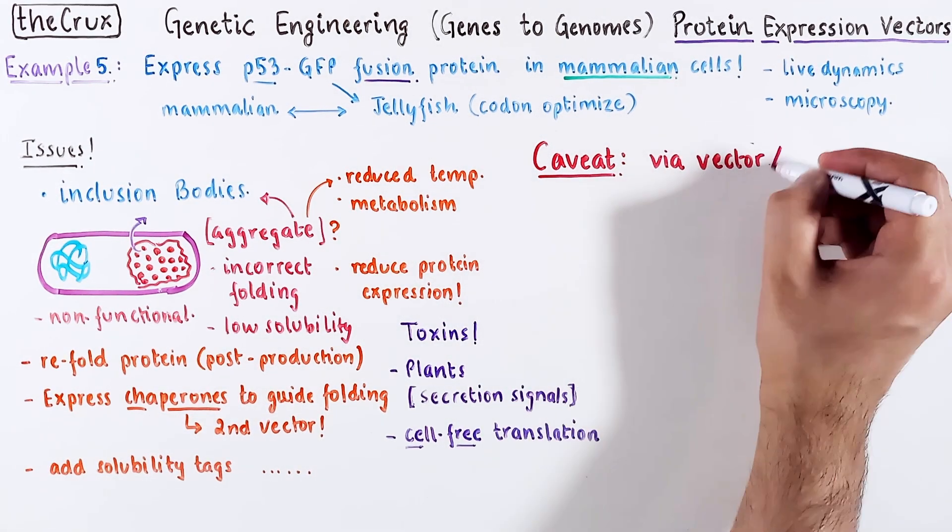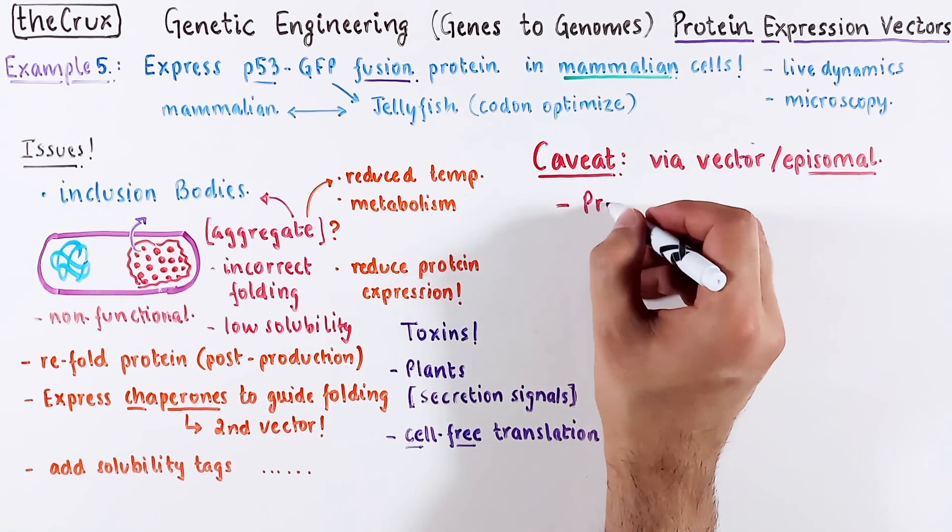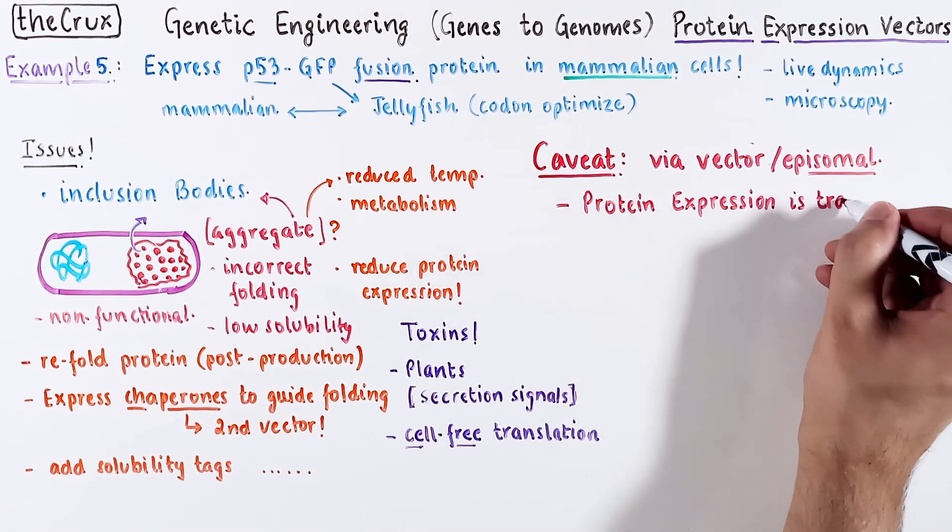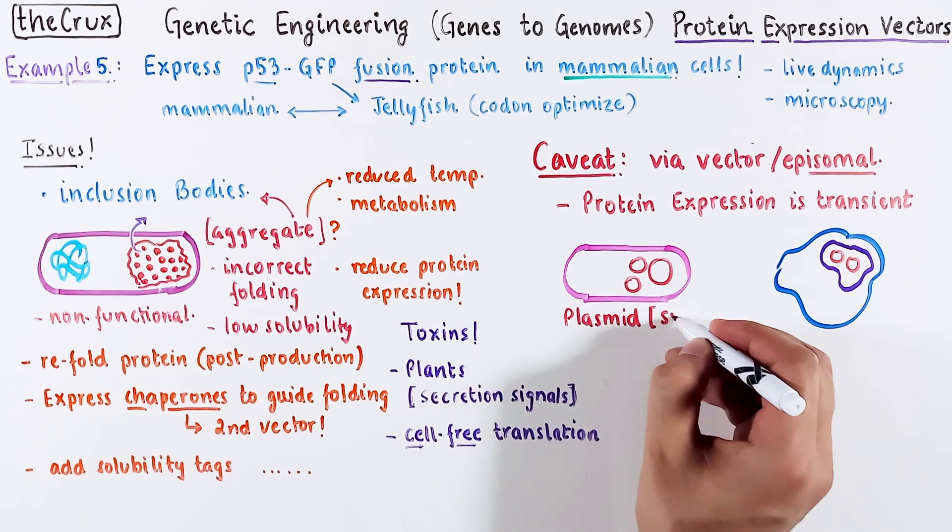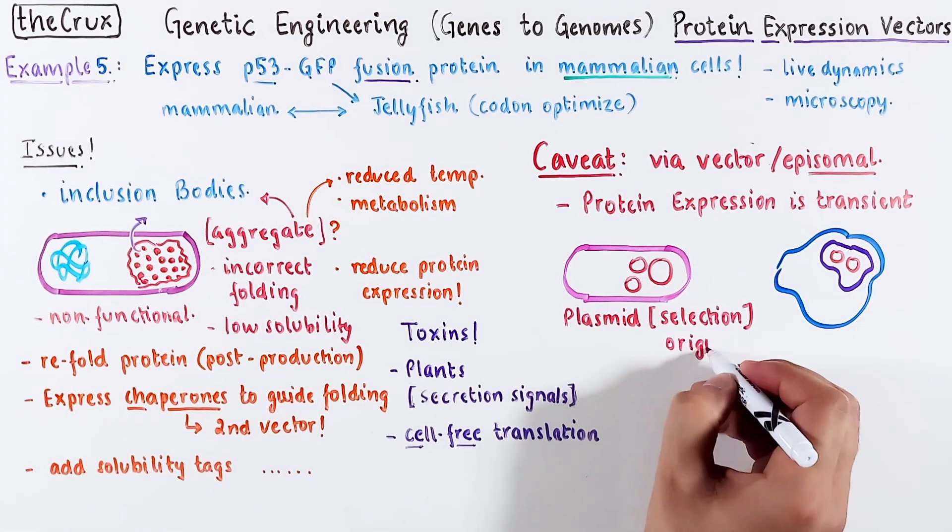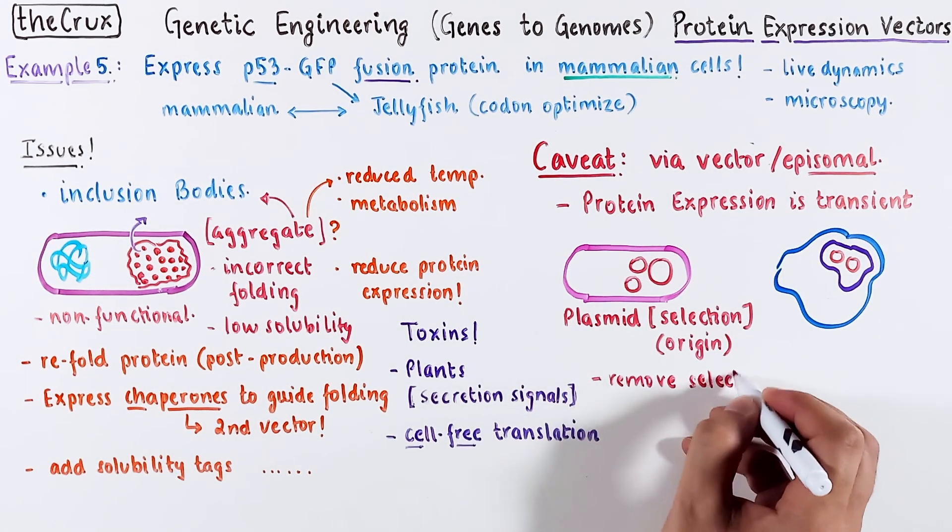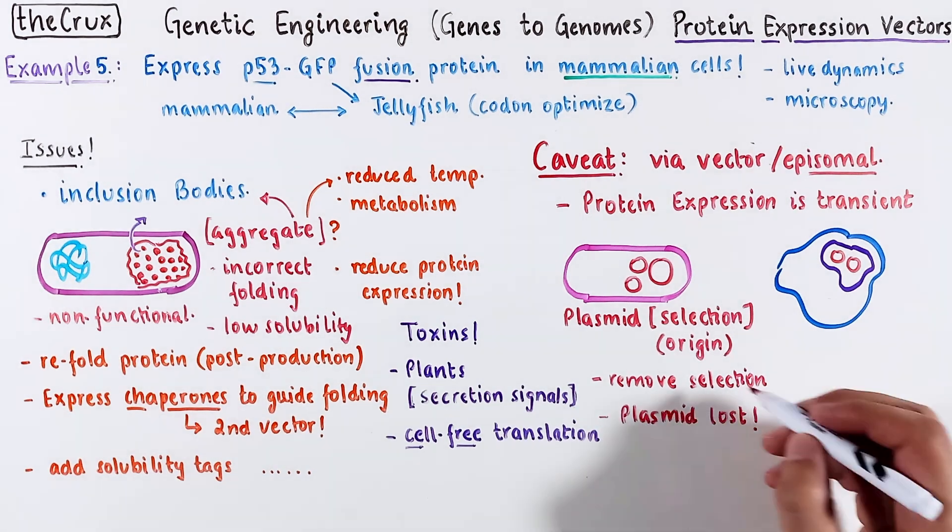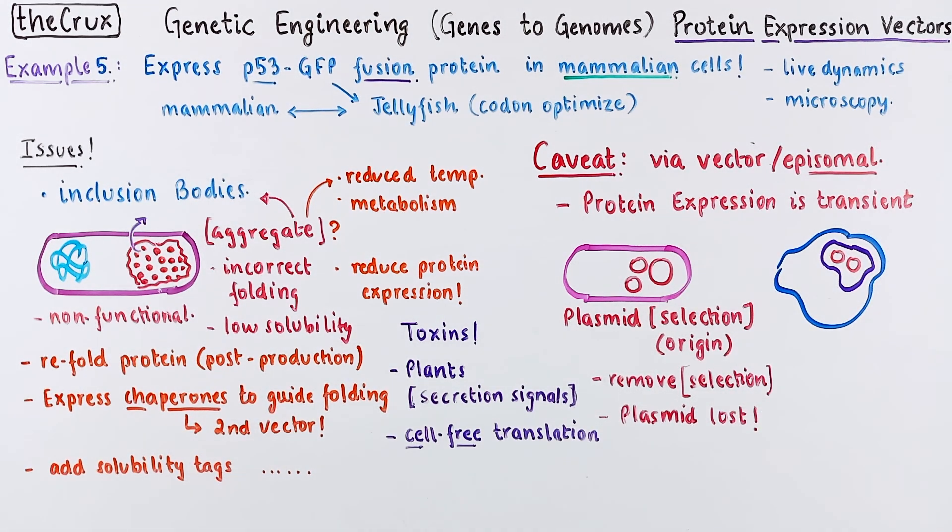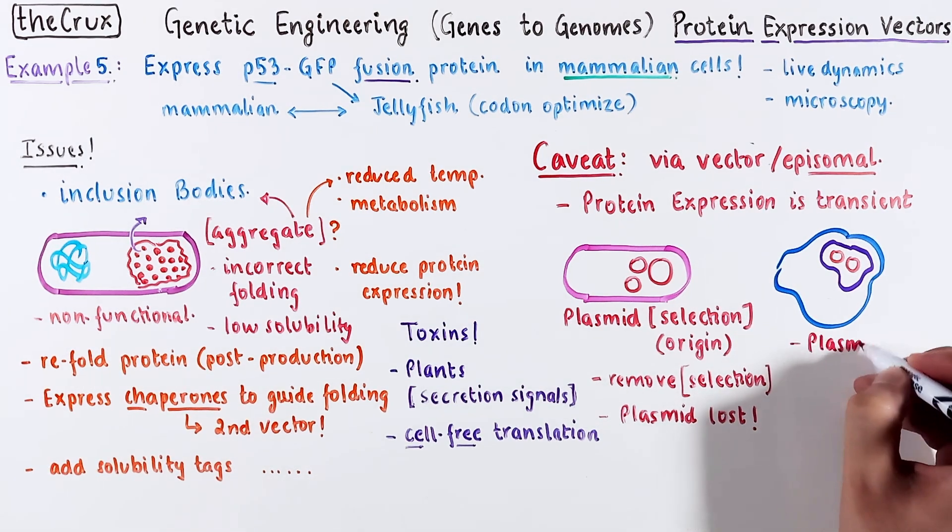All examples discussed in this video are vector-based, which means that the expression is temporary. In prokaryotes, the plasmid is an independent replicon with a selection system. If you remove selection bias, the plasmid will eventually be lost after some generations of bacterial division. Since selection is present at some level, we don't worry about plasmids so much in bacteria. However, it is difficult in eukaryotes.